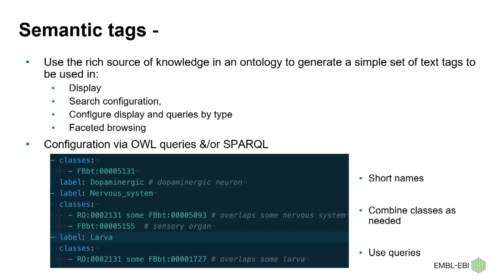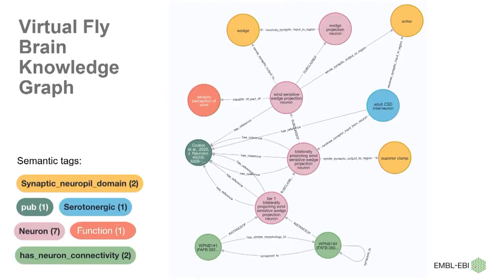Semantic tags can be configured using SPARQL or OWL queries or a mix of both. You can take complexity — for example, in the fly brain work, a query expressing that particular cells are present in the larva — and if you can just make a little tag that says 'larva,' you can use that in display, search configuration, faceted browsing, et cetera. Here's one example from the Virtual Fly Brain knowledge graph, with tags including serotonergic neuron (blue), synaptic neuropil domains (orange, brain regions), and tags for available data like neural connectivity.